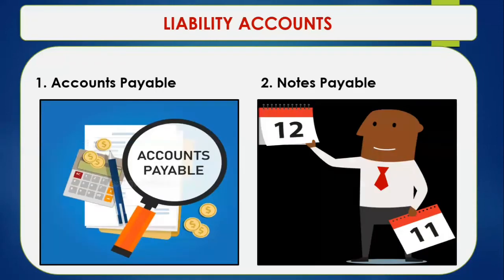The next type of chart of accounts is the liability account. Under liability account we have accounts payable and notes payable. Accounts payable represents the liability account of the company arising from the purchase of merchandise intended for use. Notes payable represents a liability account supported by a promissory note issued by the company.